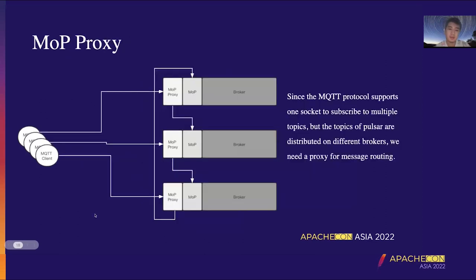At the end of this section, I will introduce a new component in MOP, that is MOP Proxy. Since Pulsar topics are distributed across different brokers in the cluster, while the MQTT protocol does not support redirect semantics and MQTT supports one socket for wildcard subscription, we need an intermediate layer to help the client do the topic lookup and multi-topic subscription.